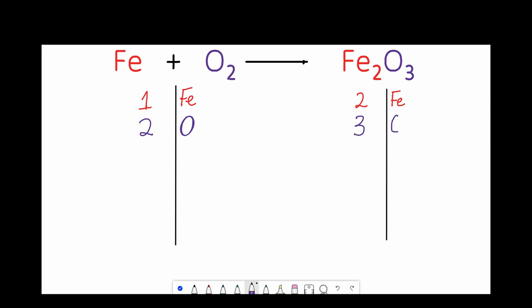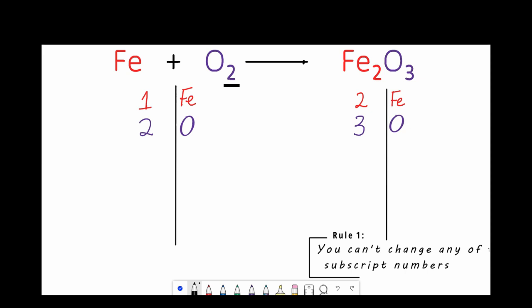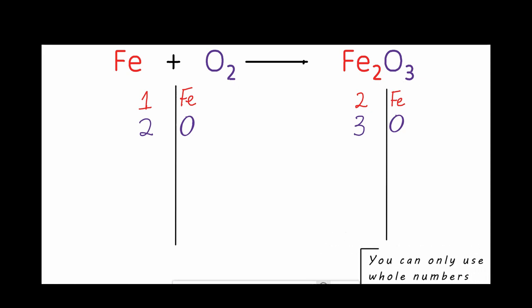So this is clearly not a balanced equation so we've got to do something about it. But before we do, we're just going to go over some ground rules. Rule one: you can't change any of the subscript numbers. And rule two: you can only use whole numbers in front of elements or compounds.